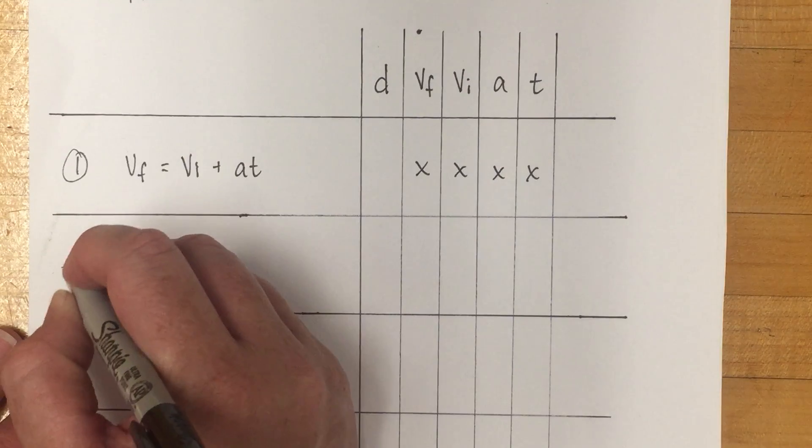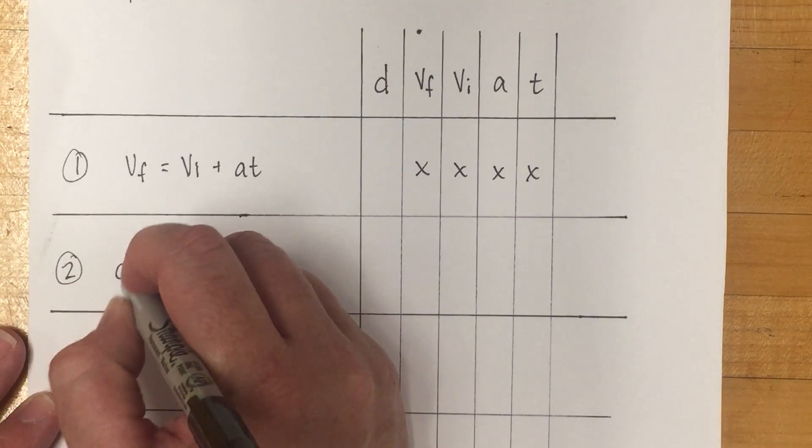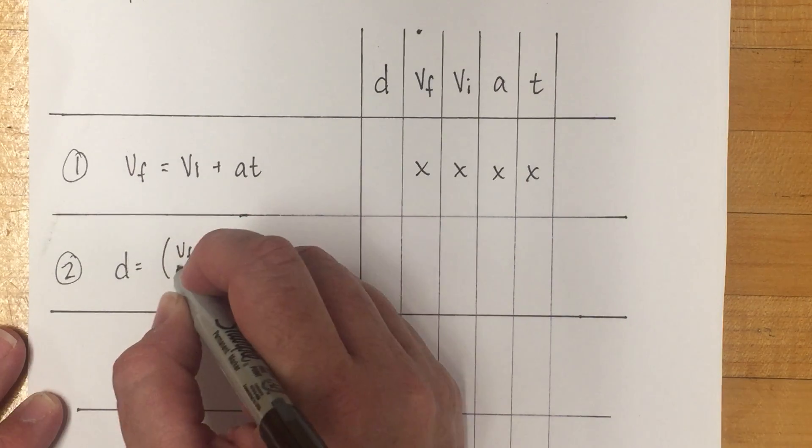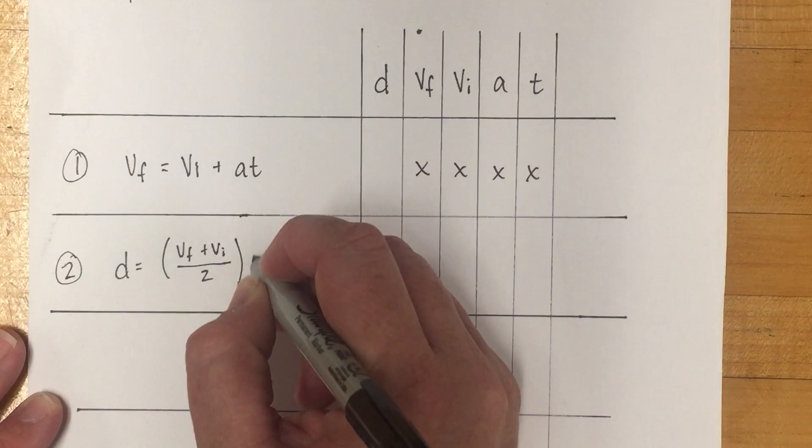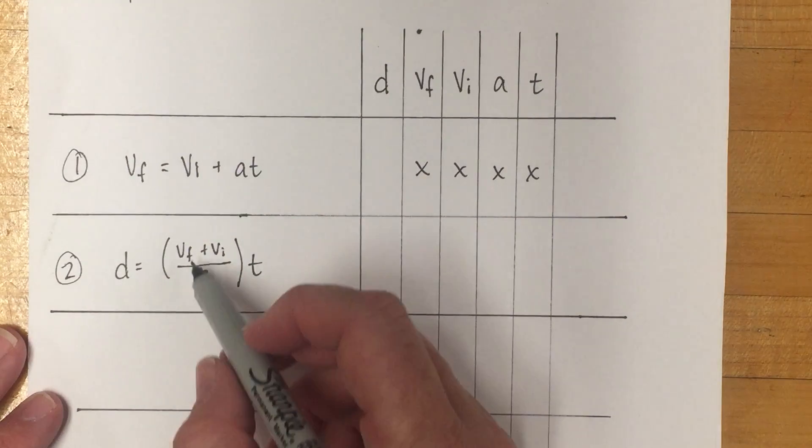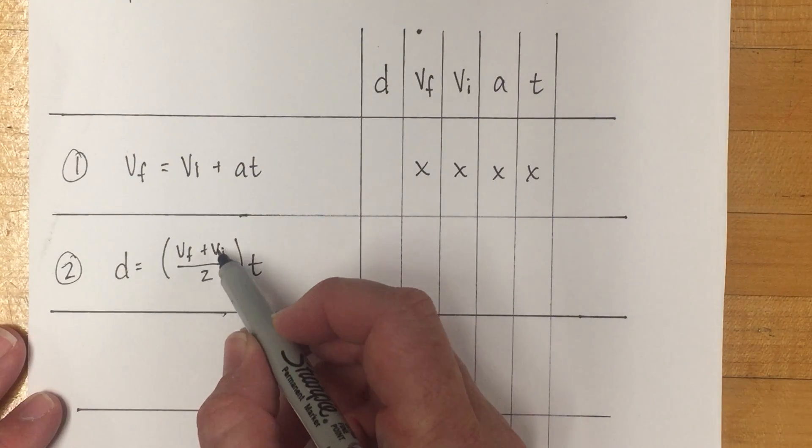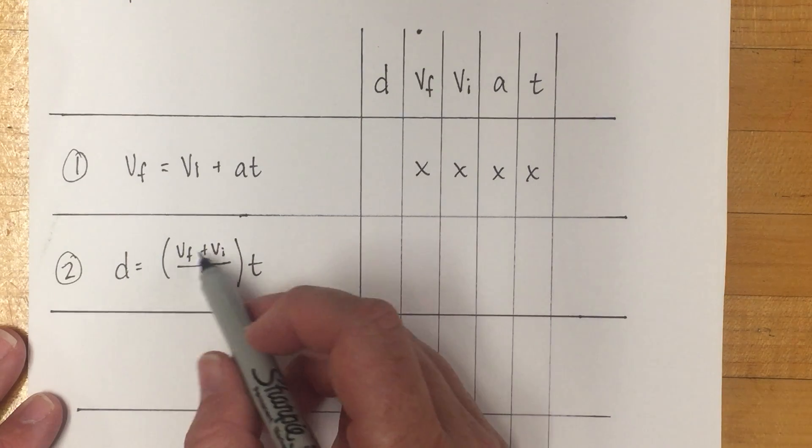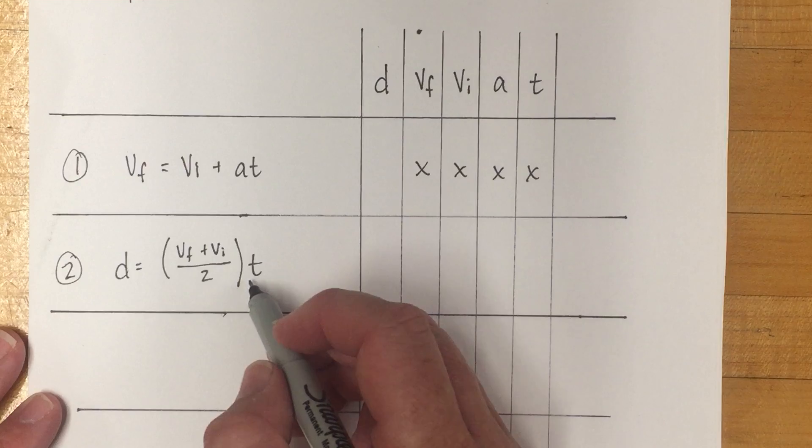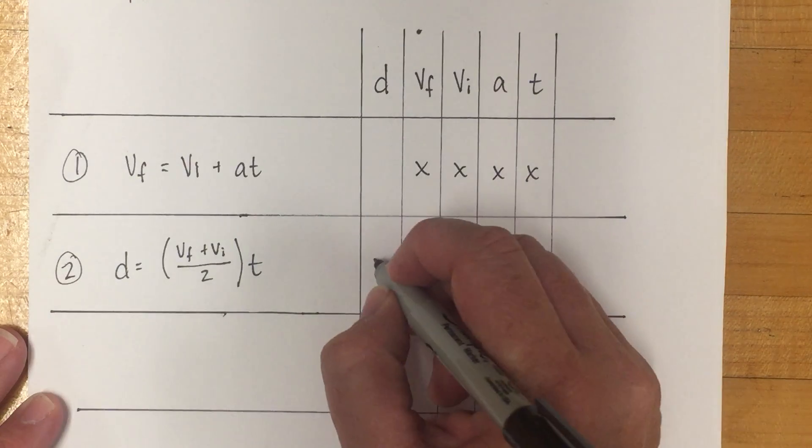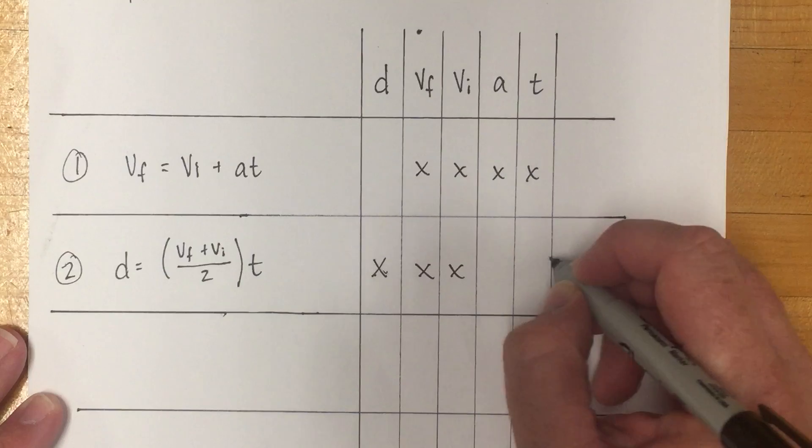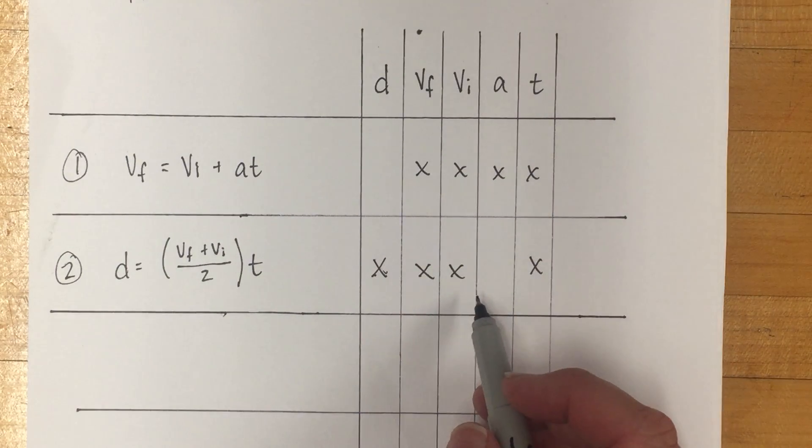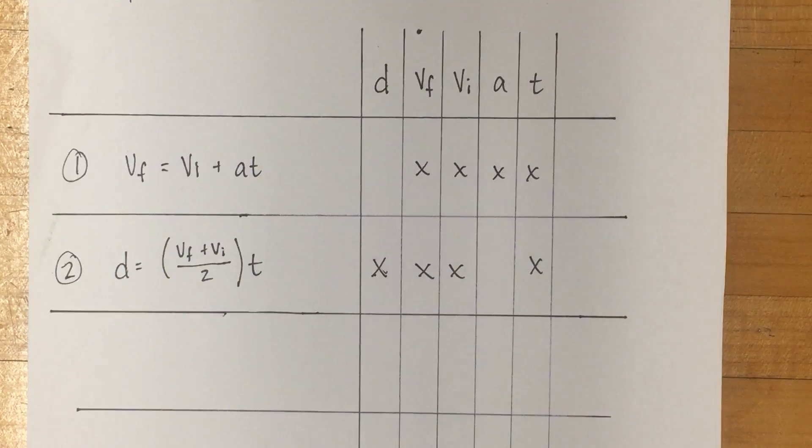The second equation that we use is d equals vf plus vi over 2 times t. This gives us our average velocity, and distance equals average velocity times time. In this one we have d, vf, vi, and t. We might not know what the acceleration is, but we have the rest of the information to solve.